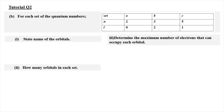Now we're going to move on to tutorial question 2. For each set of quantum numbers given in the table, we need to state the name of the orbital. So for a, the energy level is 2 and l is 0, so it becomes 2s. For b, it's going to become 3p. And then for c, it's going to become 5p.